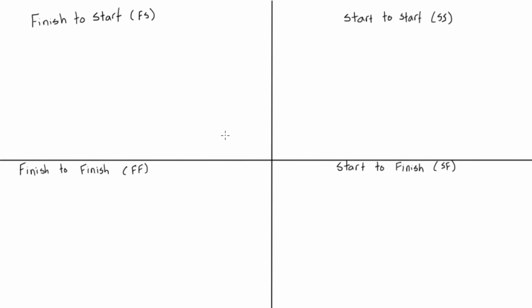Now we are going to talk about the four different logical relationships we can have in a network diagram and draw some pictures for them. We have finish to start, which is what we've been doing up until now. We have start to start, finish to finish, and start to finish.